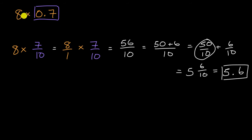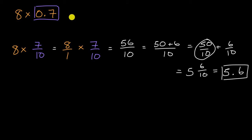If you computed something and got 60, you'd say that doesn't make sense — I should get a value less than eight. And similarly, if you got a product of like one, that's a lot less than eight. I should get something that is seven-tenths of eight.